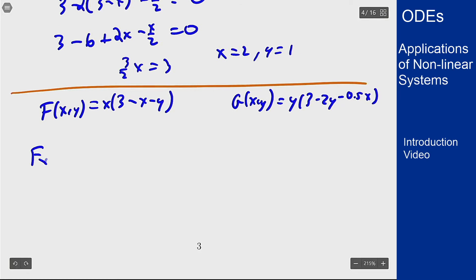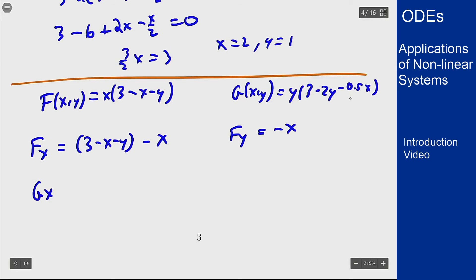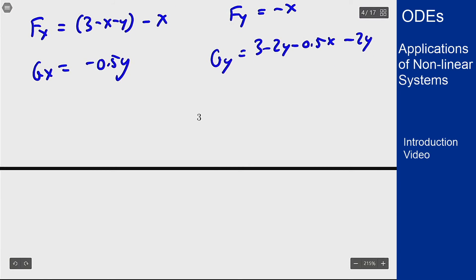So f_x is going to be (3 minus x minus y) times 1 minus x. f_y is going to be just negative x. g_x is just going to come from this one term here, is going to be negative 0.5y. And g_y is going to be (3 minus 2y minus 0.5x) and then minus 2y, the 2 from in here and the y from out here. So as a matrix, this is then going to look like (3 minus 2x minus y), (-x), (-0.5y), (3 minus 4y minus 0.5x).